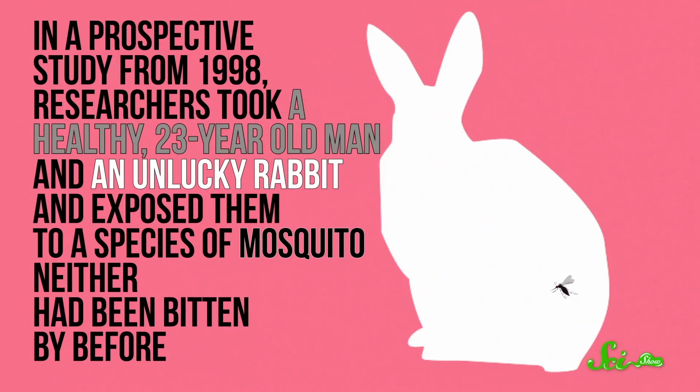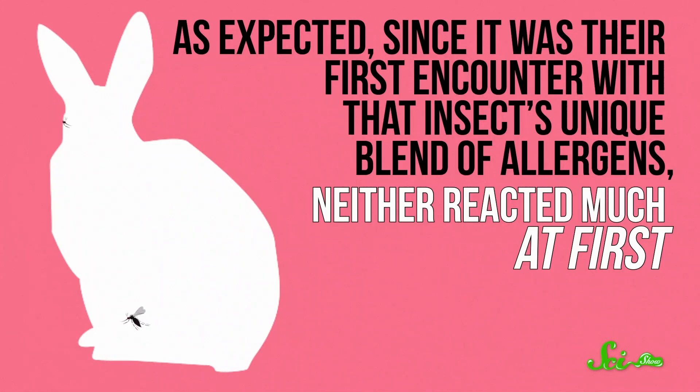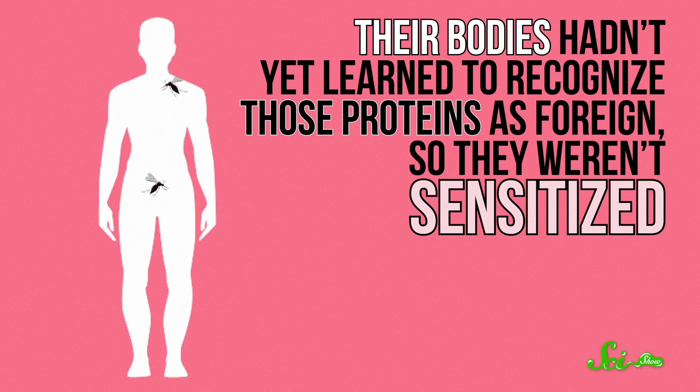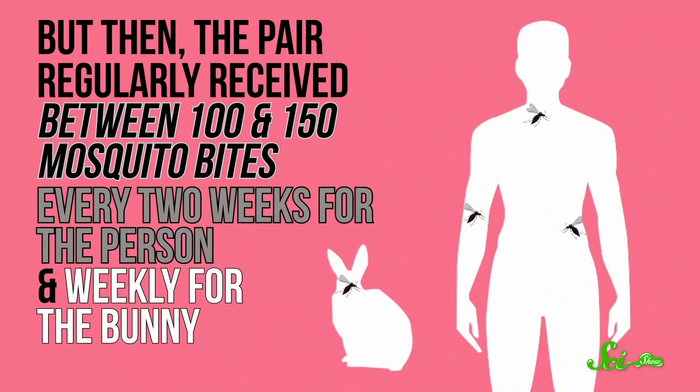In a prospective study from 1998, researchers took a healthy 23-year-old man and an unlucky rabbit and exposed them to a species of mosquito neither had been bitten by before. As expected, since it was their first encounter with that insect's unique blend of allergens, neither reacted much at first. Their bodies hadn't yet learned to recognize these proteins as foreign, so they weren't sensitized. But then the pair regularly received between 100 and 150 mosquito bites every two weeks for the person and weekly for the bunny. Over the first several weeks, the bite reactions became larger and more uncomfortable.